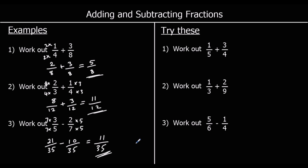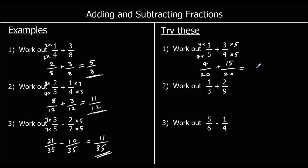Question one: work out one-fifth plus three-quarters. We need to make the denominators the same, and we're going to do that by multiplying the top and bottom of one-fifth by four, and the top and bottom of three-quarters by five, which will make both denominators twenty. So we've got four-twentieths plus fifteen-twentieths. Four plus fifteen is nineteen, so the answer is nineteen-twentieths.